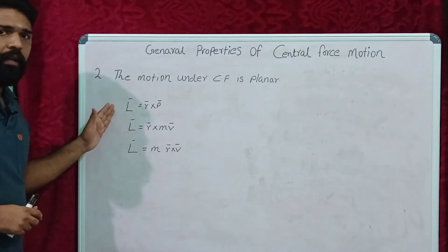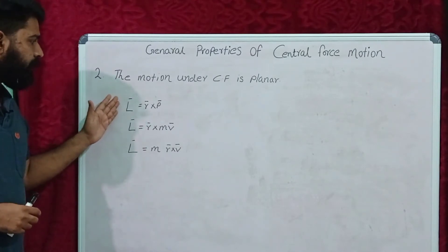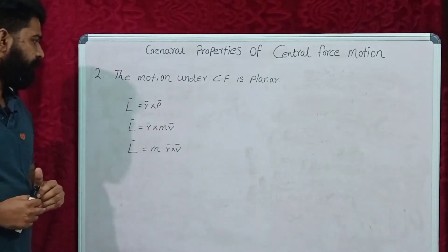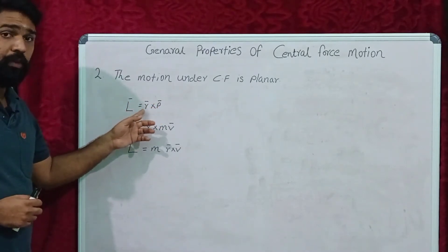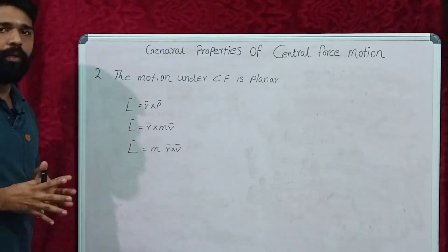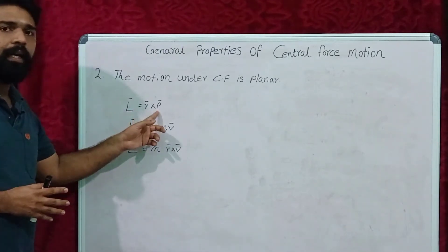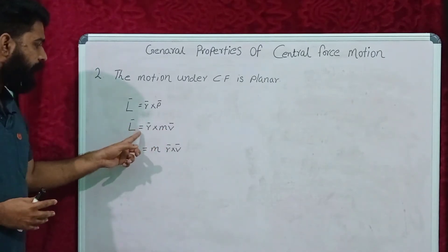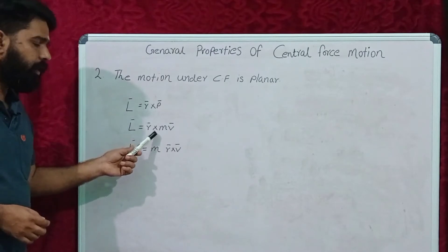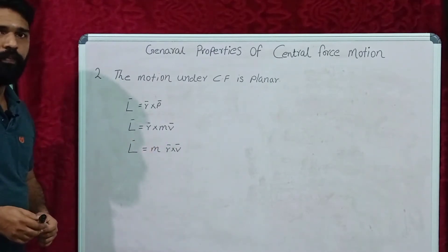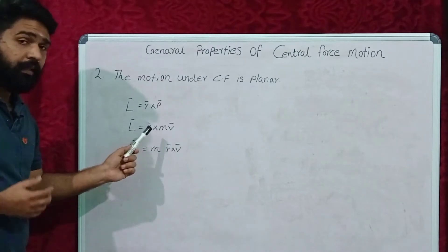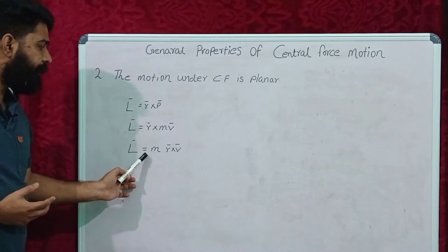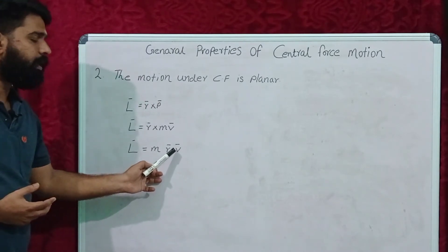When we consider the angular momentum, the vector L equals vector R cross vector P. Vector R represents the position vector and vector P represents linear momentum. Vector P can be rewritten as mass into velocity, so L equals vector R cross M times vector V, which can be rearranged as L equals M times (R cross V).